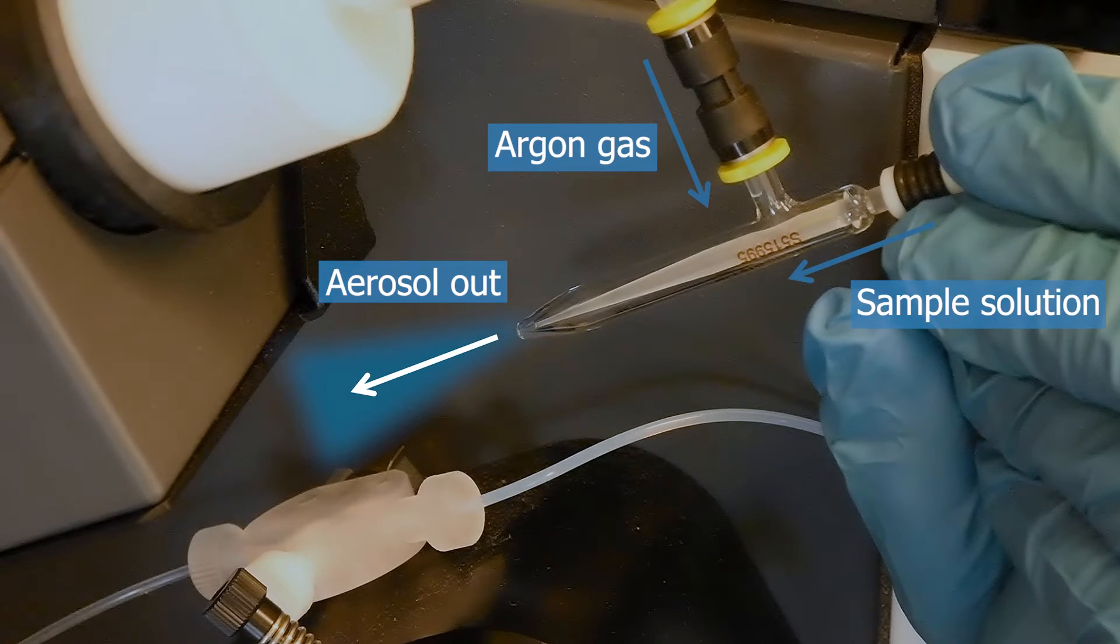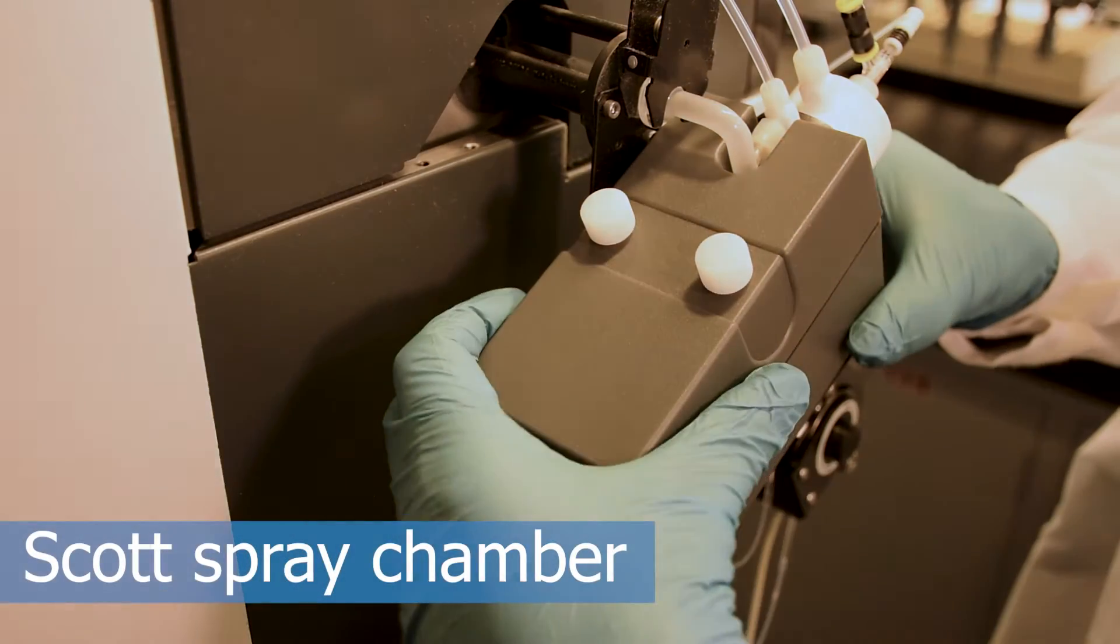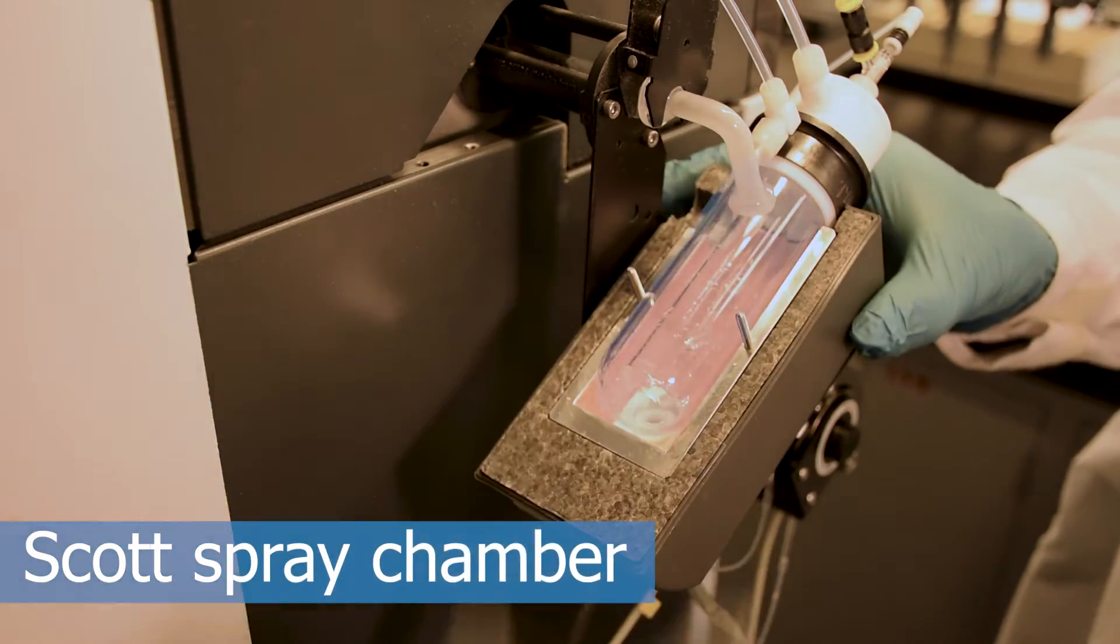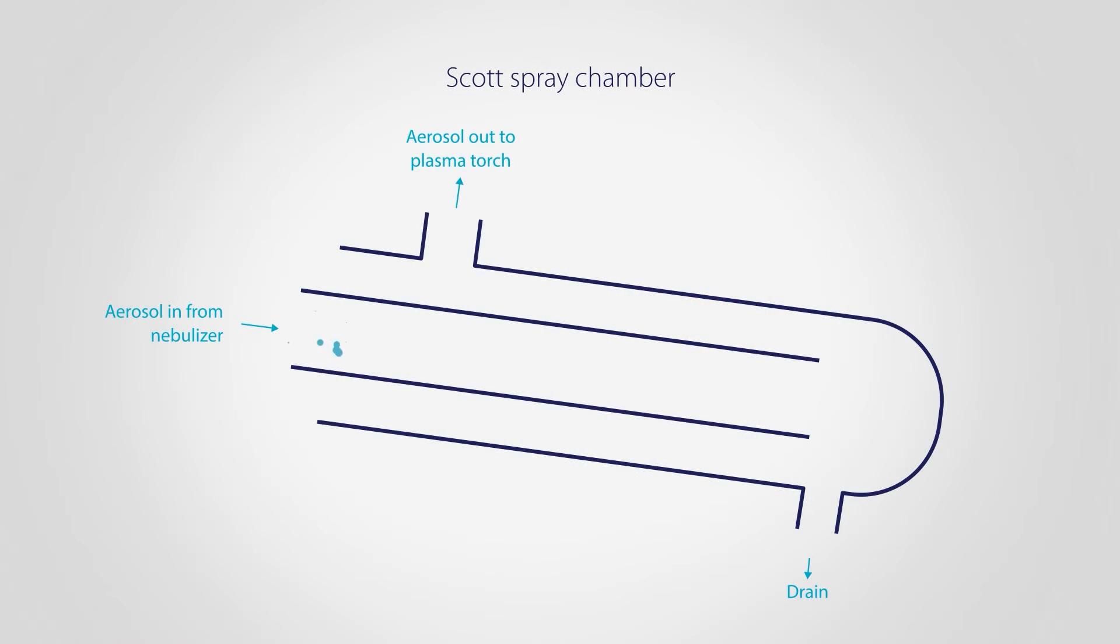The aerosol proceeds into a spray chamber. All ICP-MS use spray chambers. This one uses a design called a Scott spray chamber. The aerosol enters the chamber and larger droplets collide with the spray chamber wall, where they then drain away.